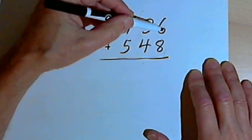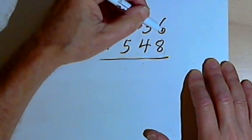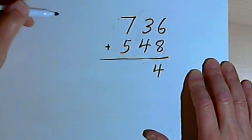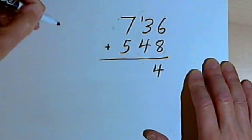So we'll go to the ones column. I've got a 6 and an 8. I'll add those together and I get a 14. So I'll write the 4 underneath the 6 and the 8, and I'll carry a 1 into the tens column.